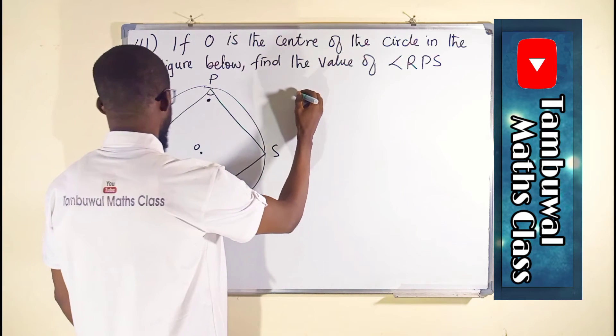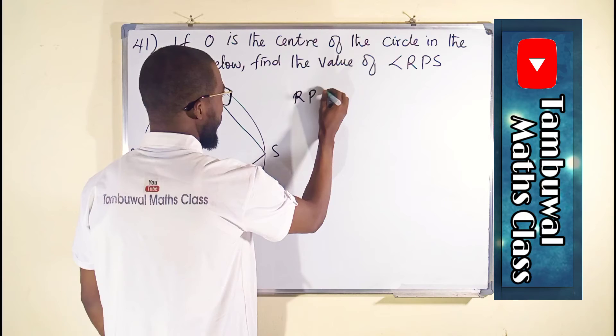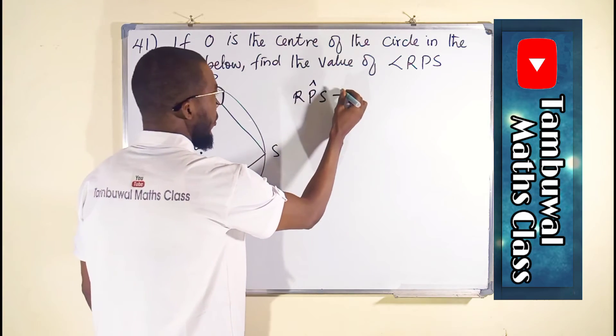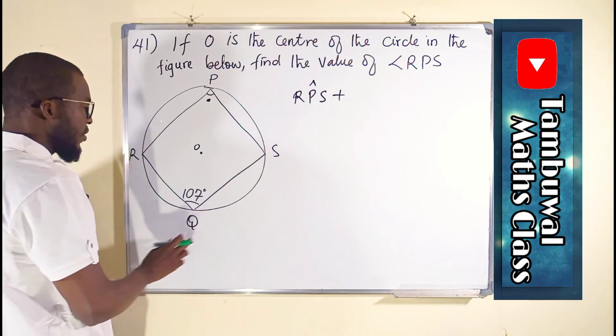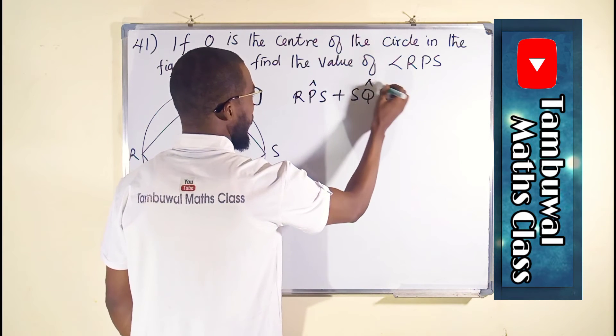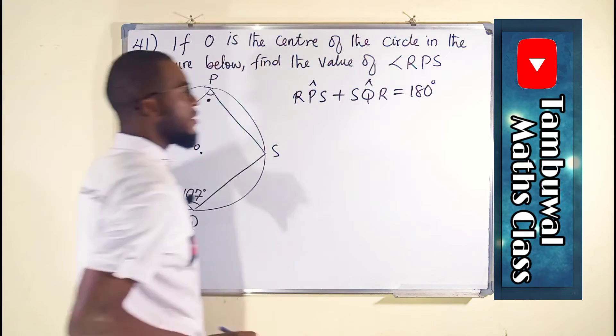So we say angle RPS, which is this angle, plus angle RQS or SQR, it's all the same. If you add them together you will obtain 180 degrees.